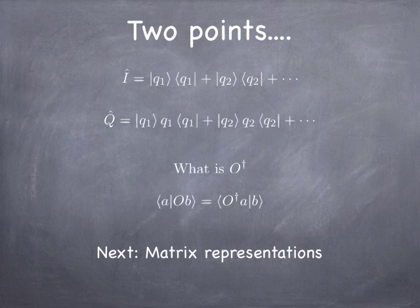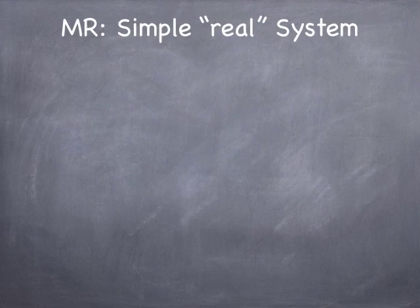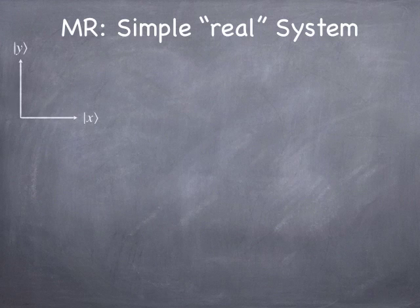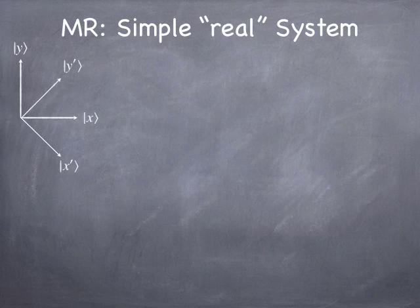Let's talk about matrix representations. We had trouble in class with the homework problem involving matrix representations of operators, so I've cooked up a system that I think is simple enough to make these ideas clear. It's very geometric. Let's say we have a couple of kets, x and y, which you could think of as i-hat and j-hat in a geometric sense. And then we have another couple of kets, x-prime and y-prime, which you could think of as an alternative coordinate system at angles of 45 degrees relative to x and y.